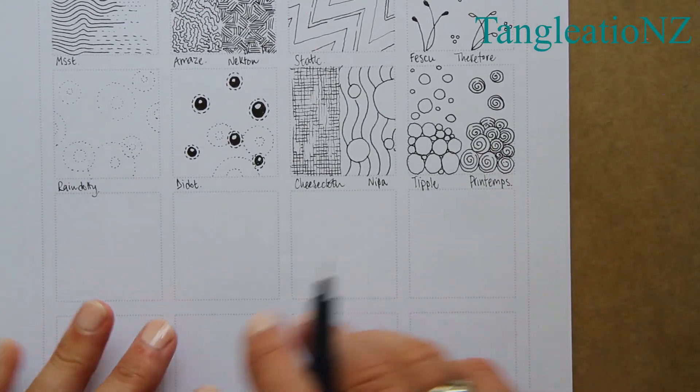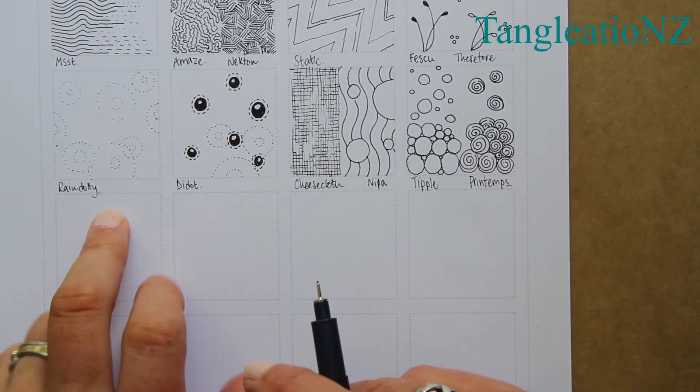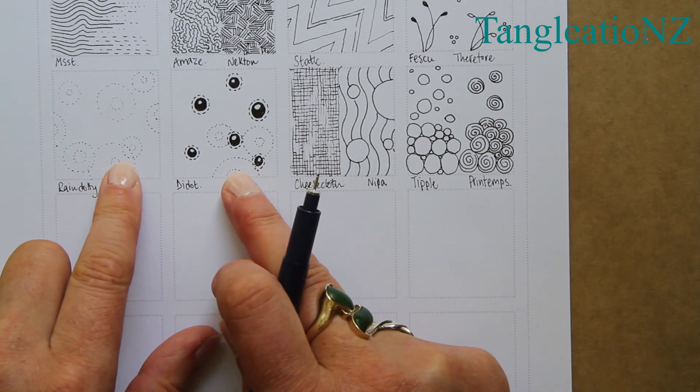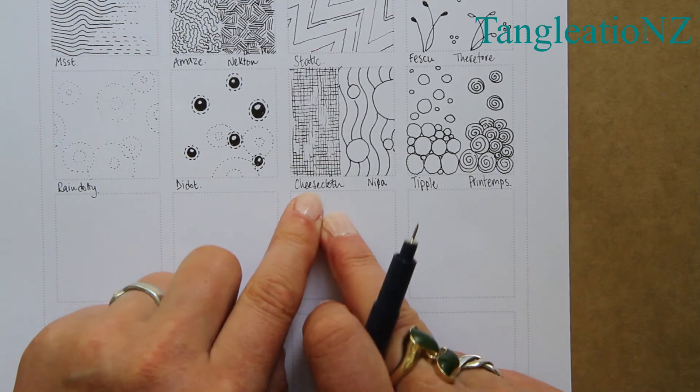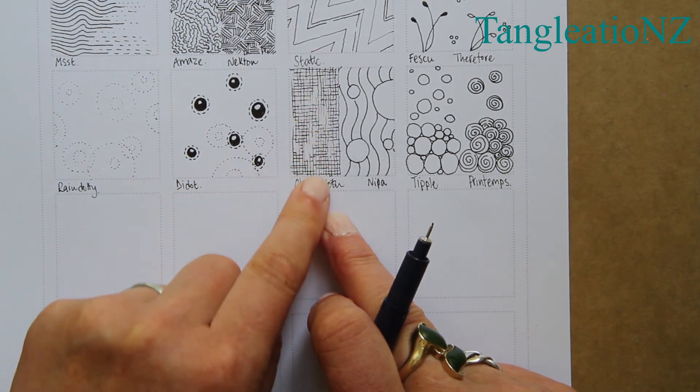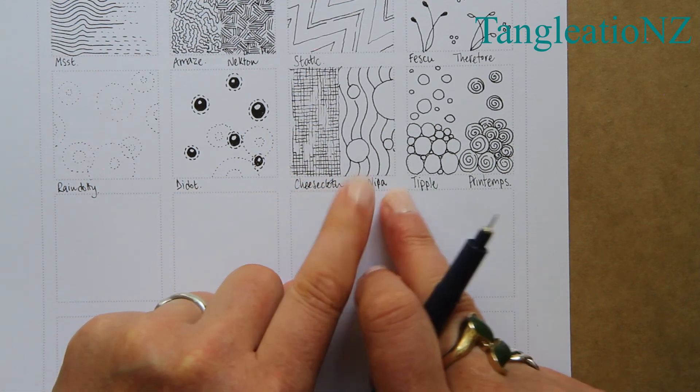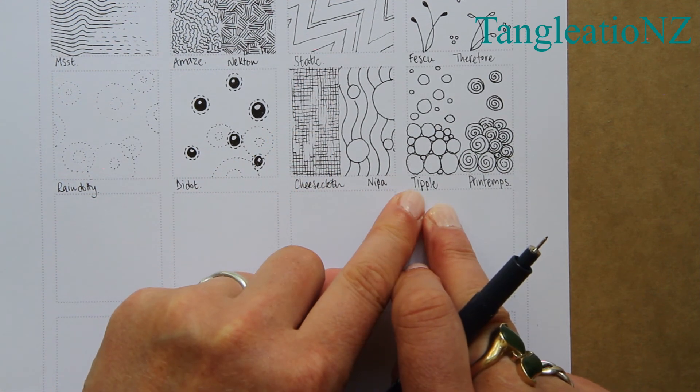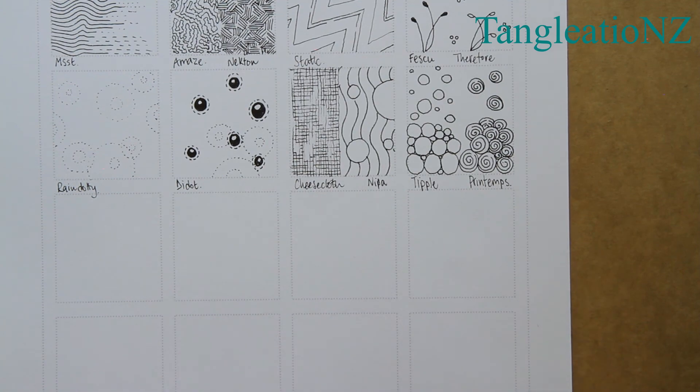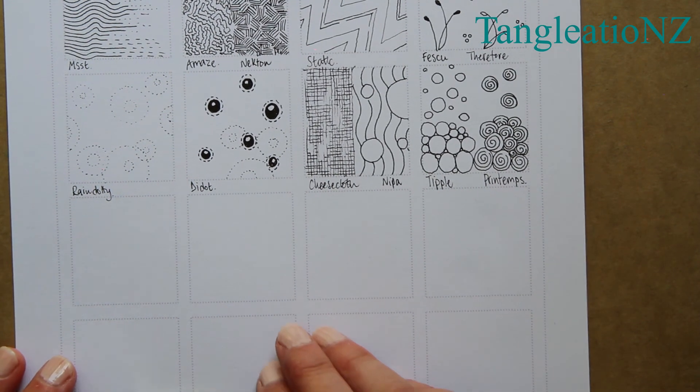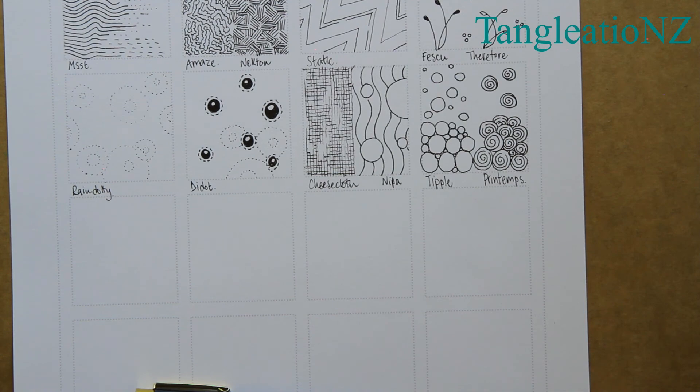So there we go, row two: Rain Dotty, Didot—think about the cousins having a play together—very organized Cheesecloth with the sparkle of the broken threads, change the scale with Nipper, or float away with either Tipples or Pretomps. I hope you've enjoyed row two and hopefully you'll join me for video three.